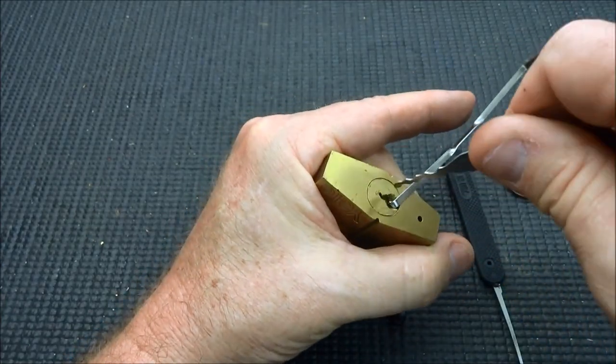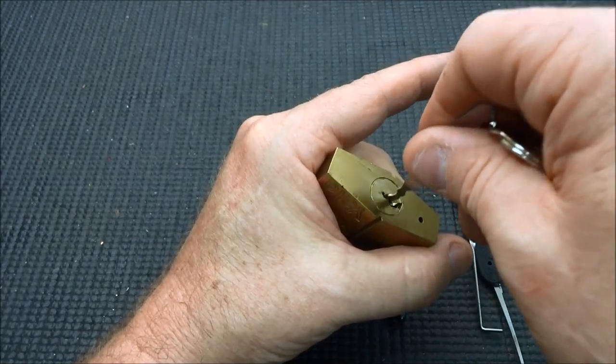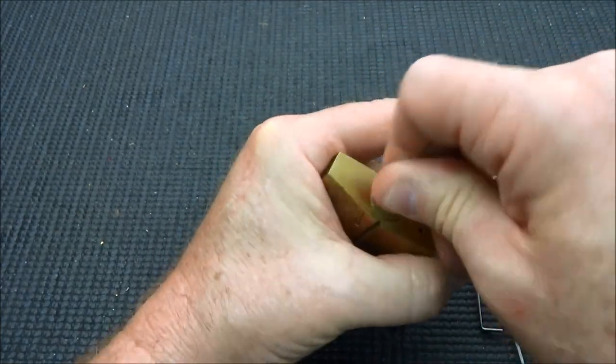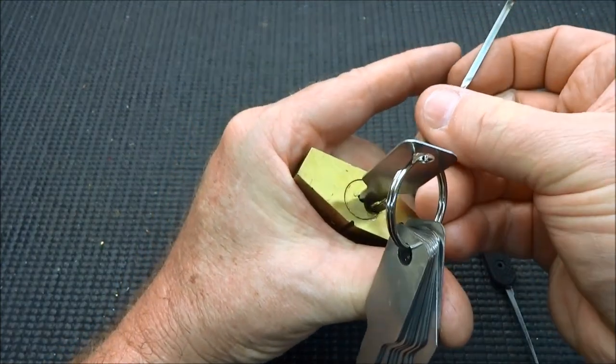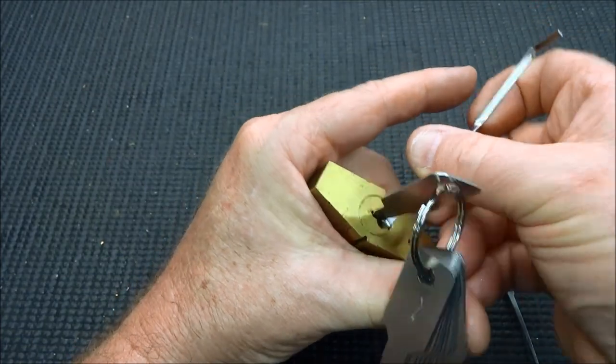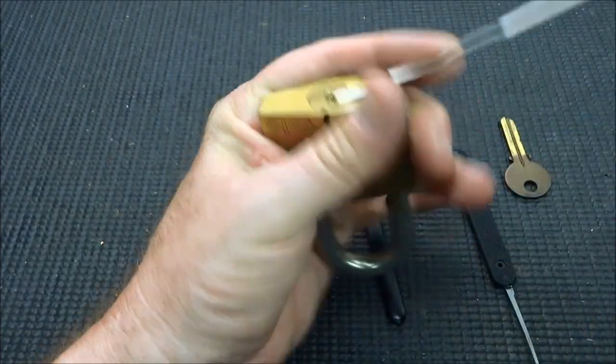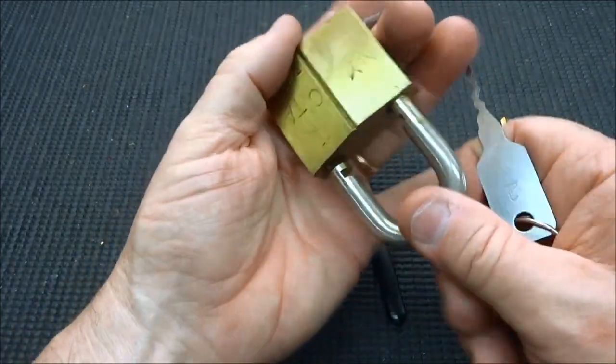Come on baby, get in there. Let me take my tension wrench out, maybe it'll be a little easier to fit it in there. There we go. Now we just slide that tension wrench in, and you don't have to have the tension wrench with jigglers, but for me it helps. And there you go, that's how quick a jiggler can work.